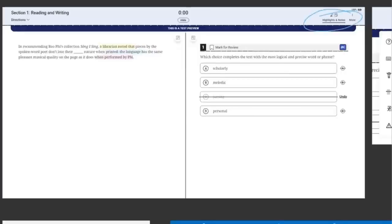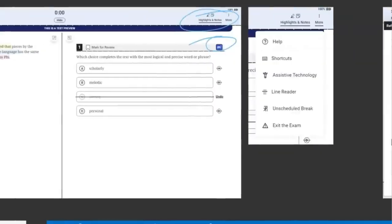As we see here, you have a highlighter and a note writer available to you on the English portion. There's also an answer eliminator, a line reader, as we see when we click on more, this is what we get right here, a line reader.